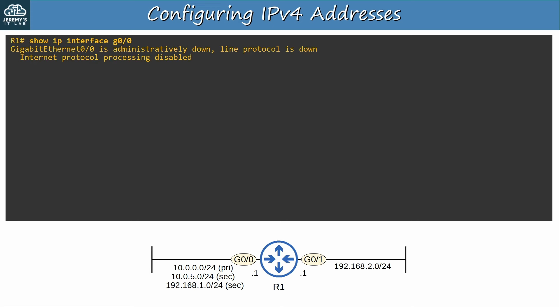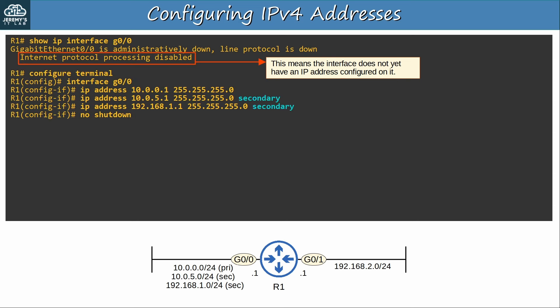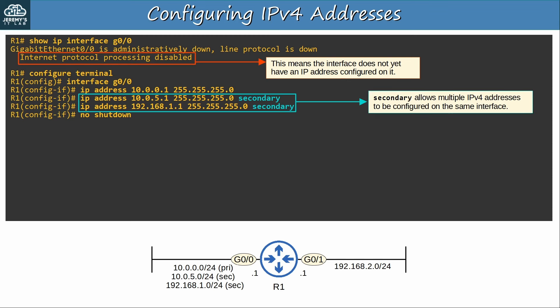I use the command SHOW IP INTERFACE G0/0. Notice that it says 'Internet Protocol Processing is disabled' — this just means that the interface does not yet have an IP address configured on it, so it won't process IP packets. I then configured the IP addresses on G0/0 as indicated in the network diagram. At the end of two of the IP address commands I added the keyword SECONDARY. The SECONDARY option allows multiple IPv4 addresses to be configured on the same interface. You did something similar in the CCNA when configuring router-on-a-stick, where you divided the physical interface into multiple logical sub-interfaces. When configuring secondary IP addresses like this, it is a single physical and logical interface but with multiple IP addresses.